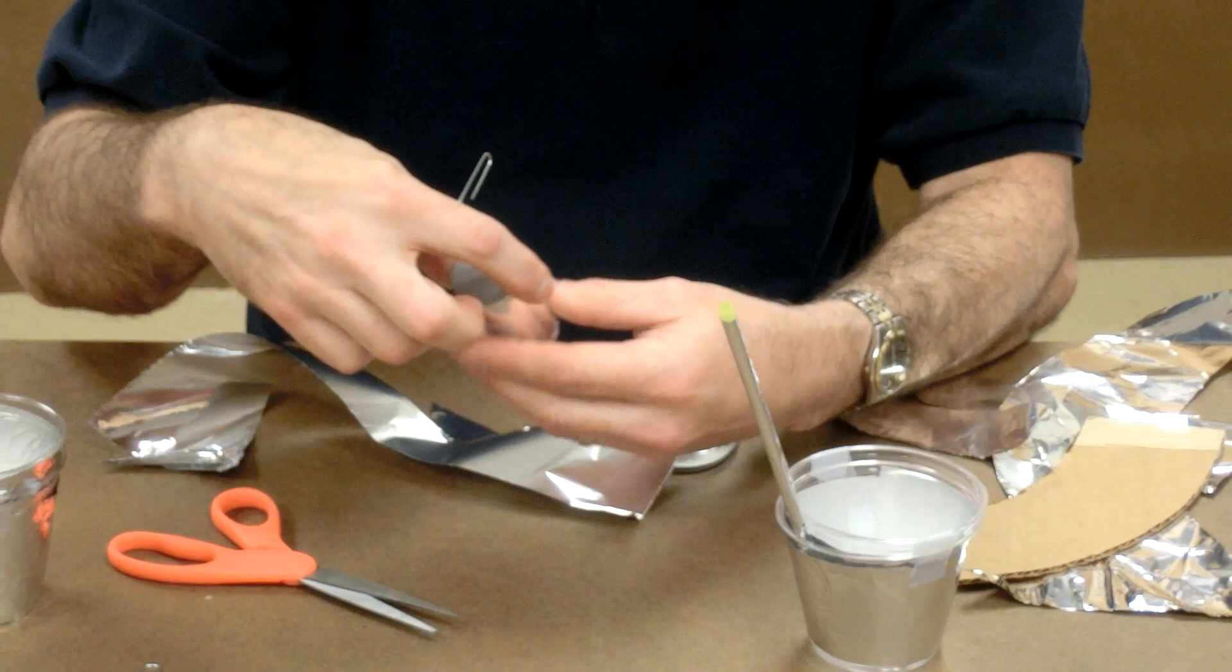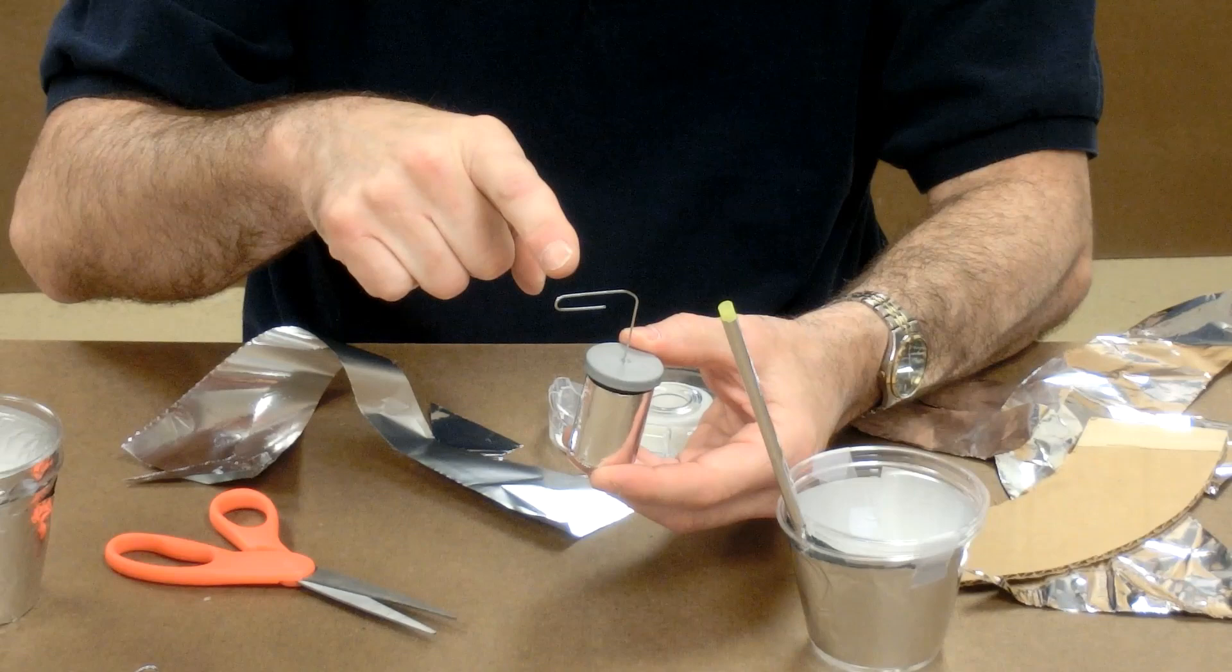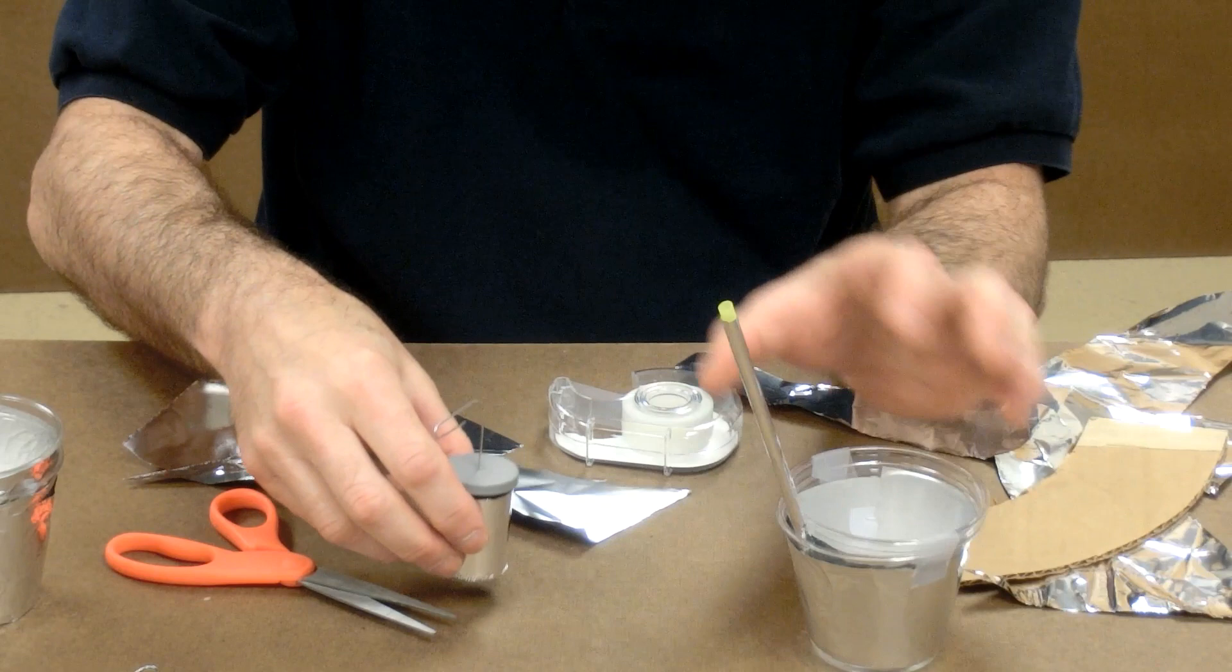Just like for the film canister Leyden jar, we've got salt water on the inside and we connect to the salt water through the paper clip and we have aluminum foil on the outside. In another video clip, I'll demonstrate how to charge them.